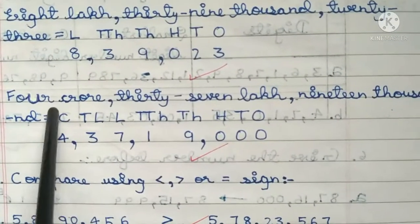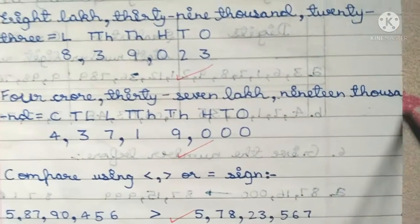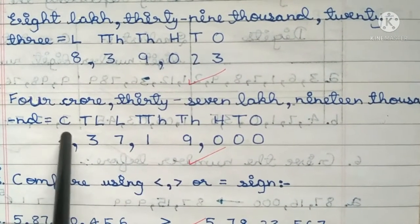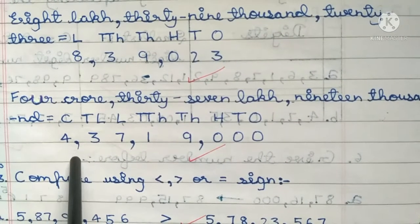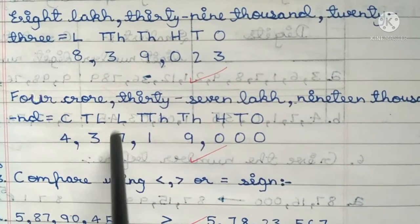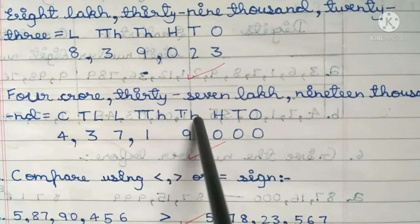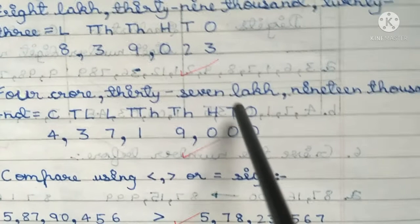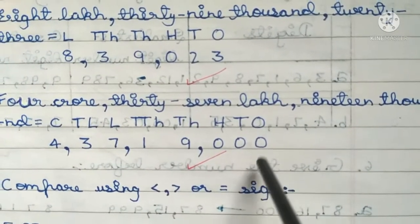4 crore 37,19,000. That is equal to: crores is 4, ten-lakhs is 3, lakhs is 7, ten-thousands is 1, thousands is 9, hundreds is 0, tens is 0, ones is 0. So, 4,37,19,000.